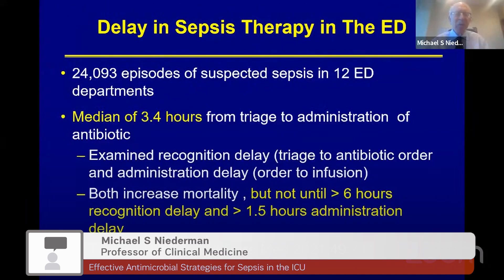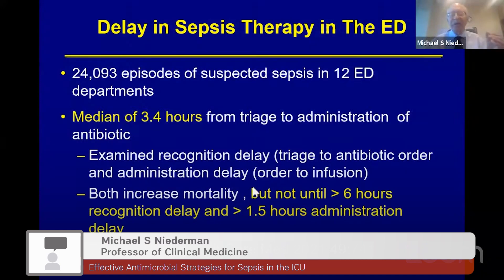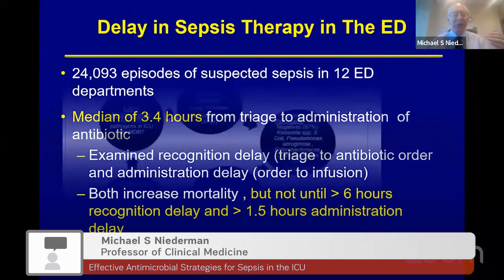When looking at sepsis delays in the emergency department, there are two types of delays: the delay from triage to antibiotic administration, and the time from entry to recognition of sepsis. More than one and a half hours of an administration delay, and more than six hours in a recognition delay, are associated with increased mortality. It is extremely important to recognize and treat sepsis in severely ill patients as early as possible.